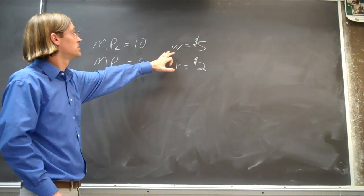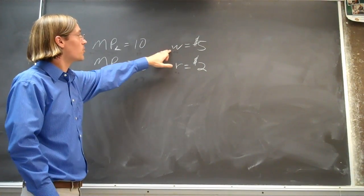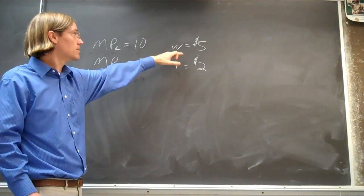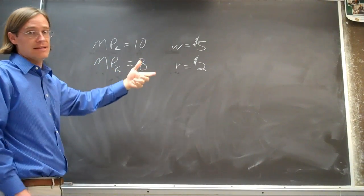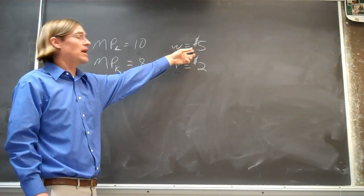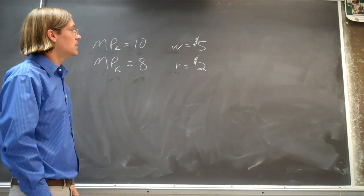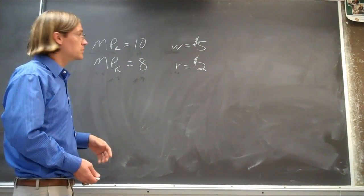And then we've got the cost of capital and the cost of labor. So the wage rate W here is the cost of adding that next worker. That wage rate is $5, so you're paying five bucks to get that next worker, to employ that next unit of labor.